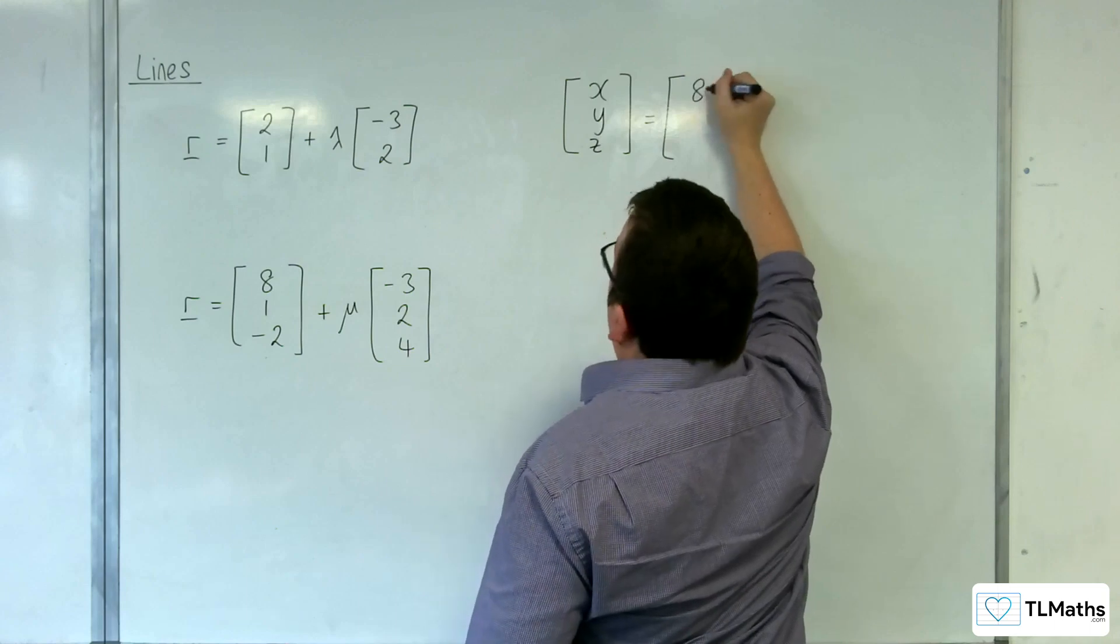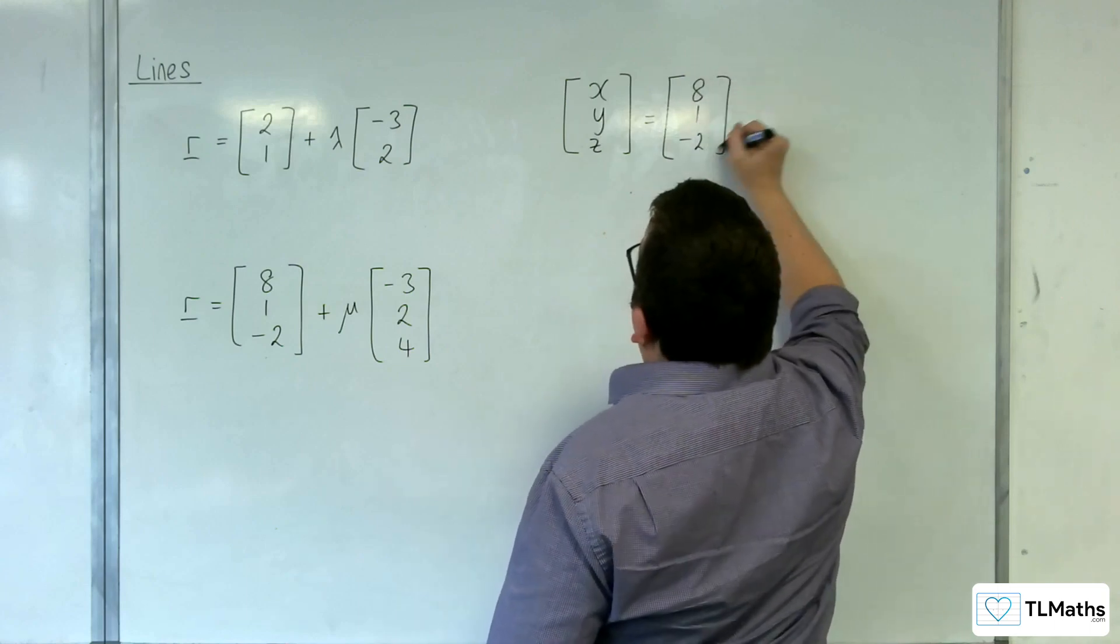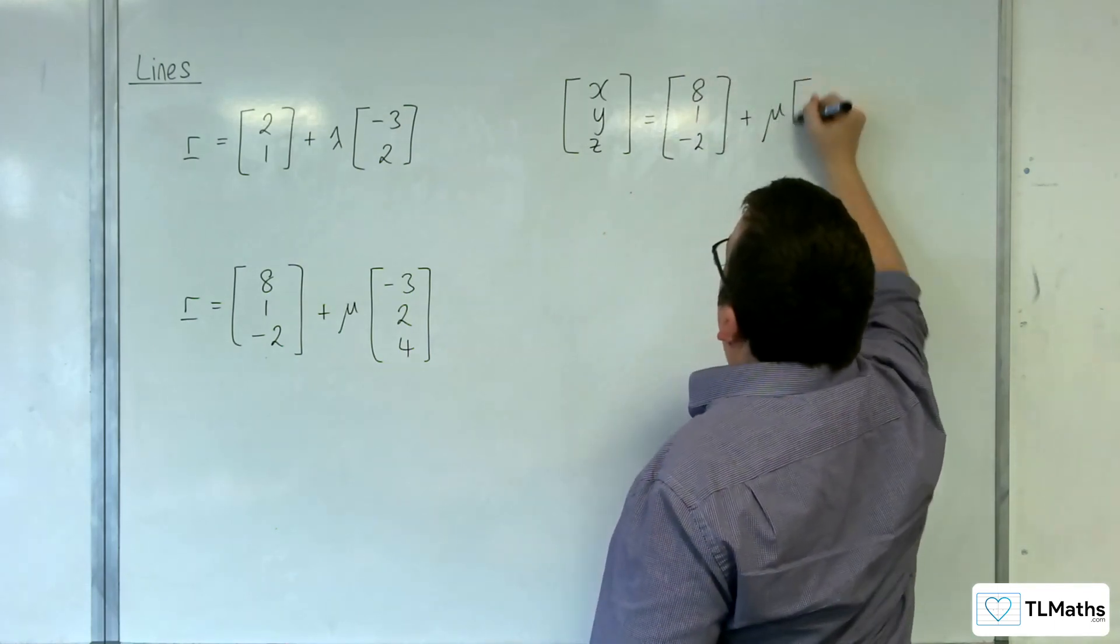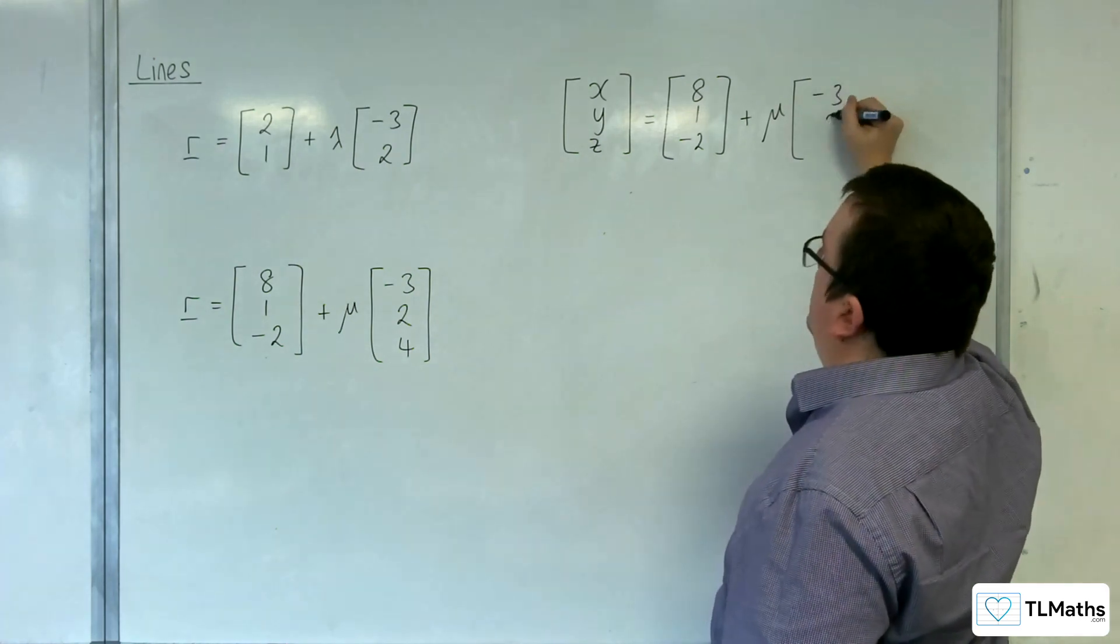And we've got 8, 1 minus 2, plus mu times minus 3, 2, 4.